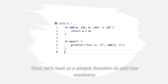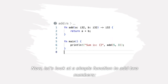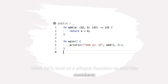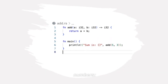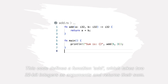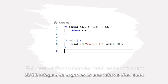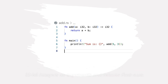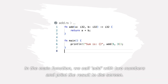Now let's look at a simple function to add two numbers. This code defines a function add, which takes two 32-bit integers as arguments and returns their sum. In the main function, we call add with two numbers and print the result to the screen.